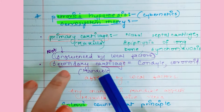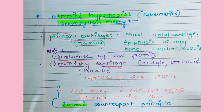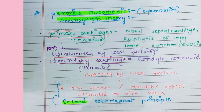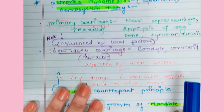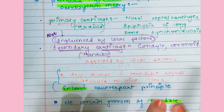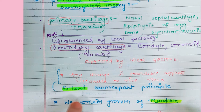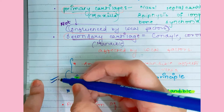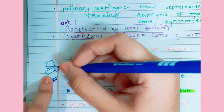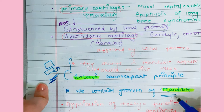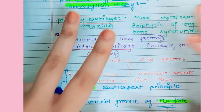The secondary cartilage — that is, the condyle and coronoid of the mandible — is affected by local factors. Any change in the mandible will affect the maxilla and vice versa, because of the lowest counterpart principle: maxilla and mandible are counterparts that grow at the same rate. This is why we can modulate mandible growth, mostly giving myofunctional appliances in Class 2 cases, where we give a bionator or similar appliance to make the patient bite in a forward direction.